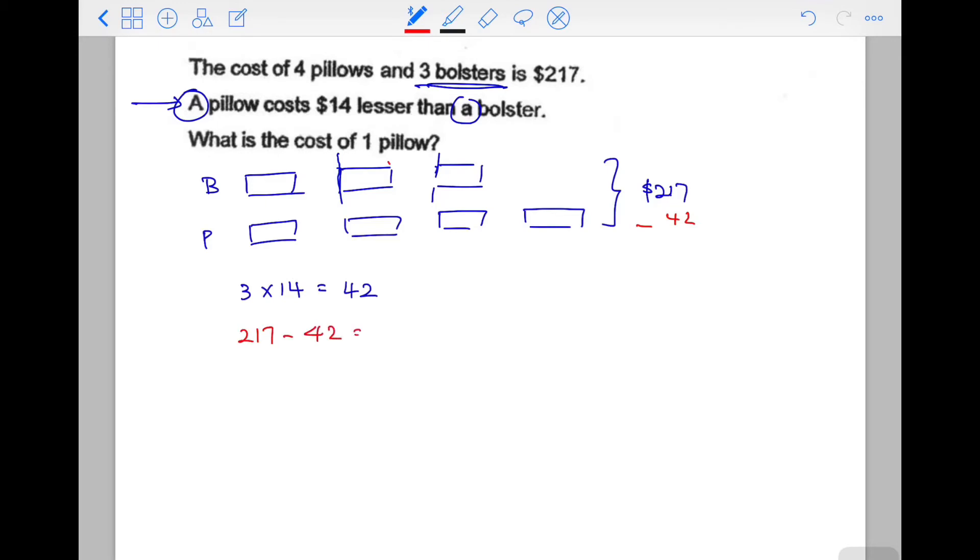So 217 minus 42 gives me 175. This 175 belongs to one, two, three, four, five, six, seven units. Therefore, seven units equals $175.